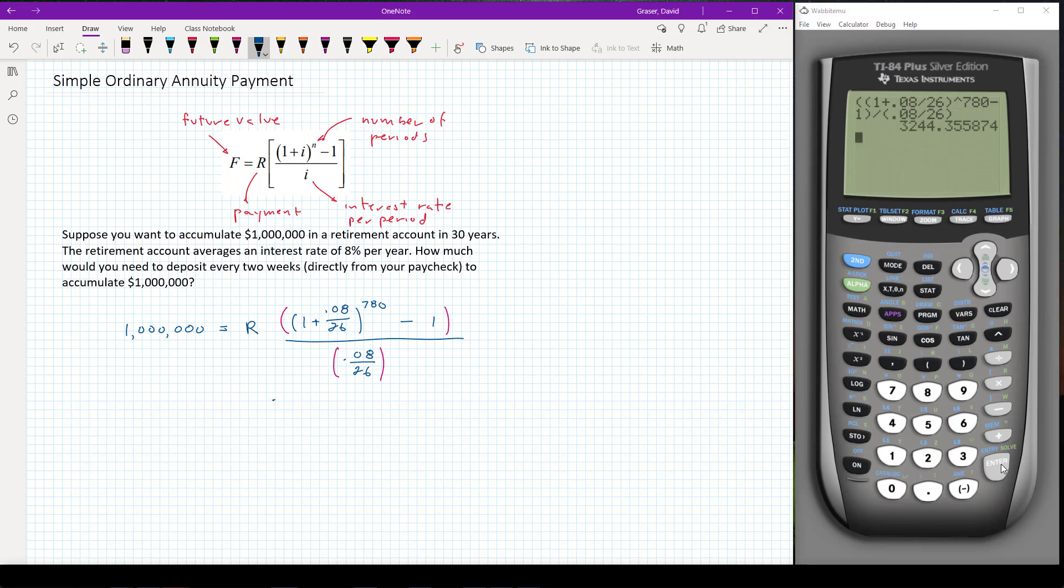So the number here for that big fraction is 3244.355874. That's multiplied times R and set equal to 1 million, what I want to end up with. So to get R by itself, I'm going to divide both sides by 3244.355874.